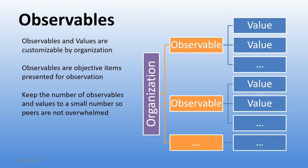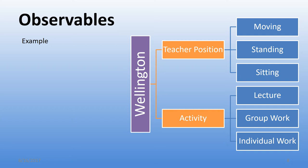So what is an observable? Observables are owned by organizations, not individual peers. An observable is a category or topic you wish to observe, and an observable value is what the observer can select. For example, the observable 'teacher position' might have values such as moving, standing, sitting, or out of the room — indicating where the teacher is during class.